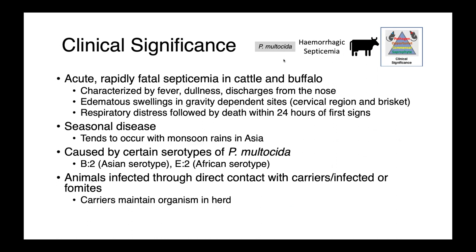Pasteurella multocida is also the cause of a rapidly fatal septicemia in cattle and buffalo called hemorrhagic septicemia. This is characterized by fever, dullness, and nasal discharges. We see edema in gravity-dependent sites — the cervical region and the brisket. Animals develop respiratory distress followed by death within as short as 24 hours of the first clinical signs. It is a seasonal disease occurring with the monsoon rains in Asia, caused only by particular serotypes — the B2 and E2 serotypes — which are different from those causing shipping fever.